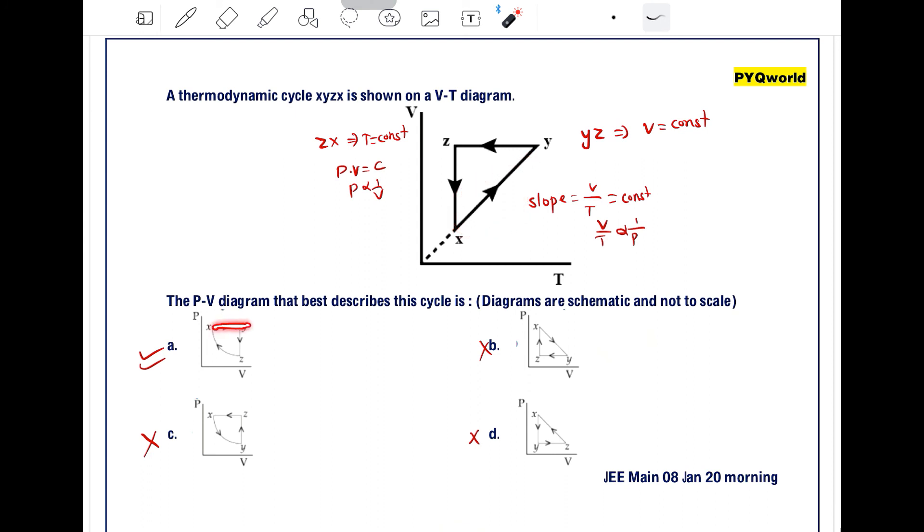So with pressure constant, this graph will come here for x-y. That is an isobaric process. So option A is the most suitable one.